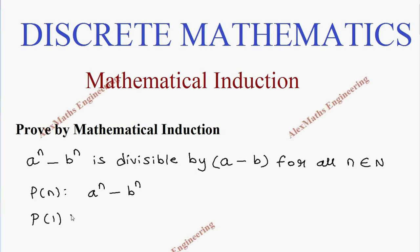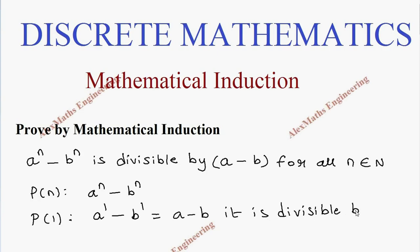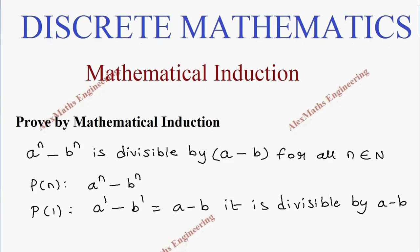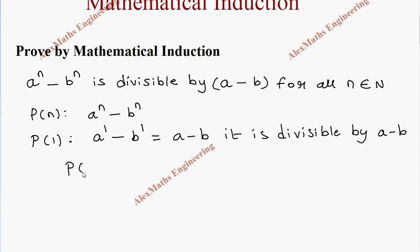We are going to find what is P(1). It means the value of n is 1, so a^n minus b^n which is a minus b, and it is divisible by (a - b). Therefore P(1) is true.